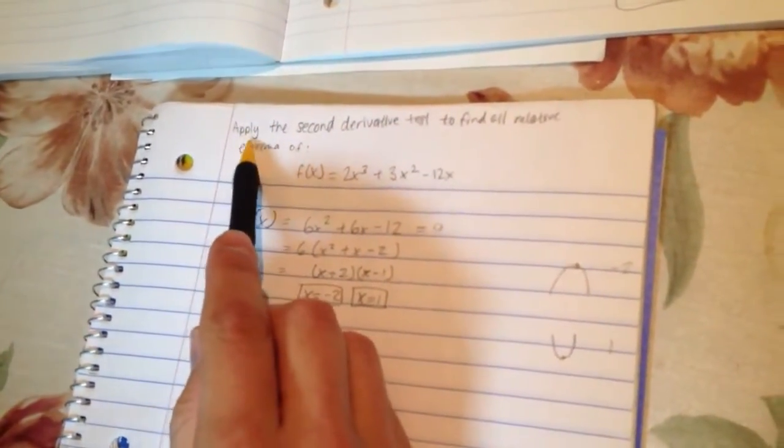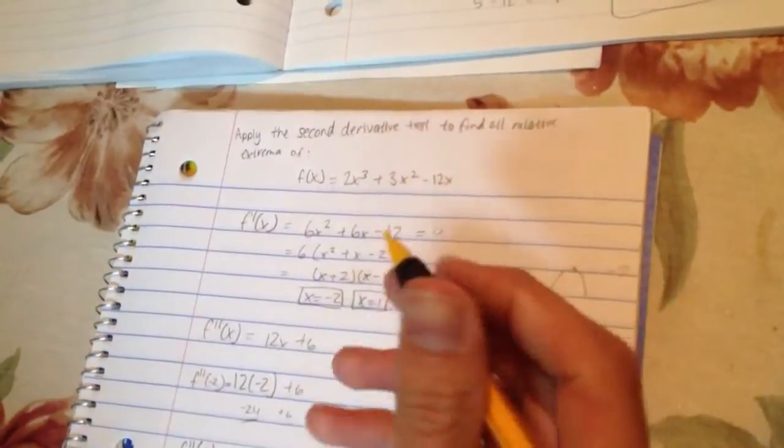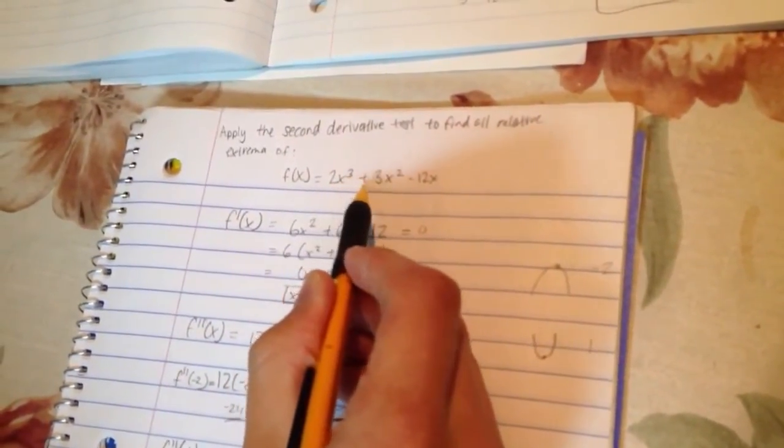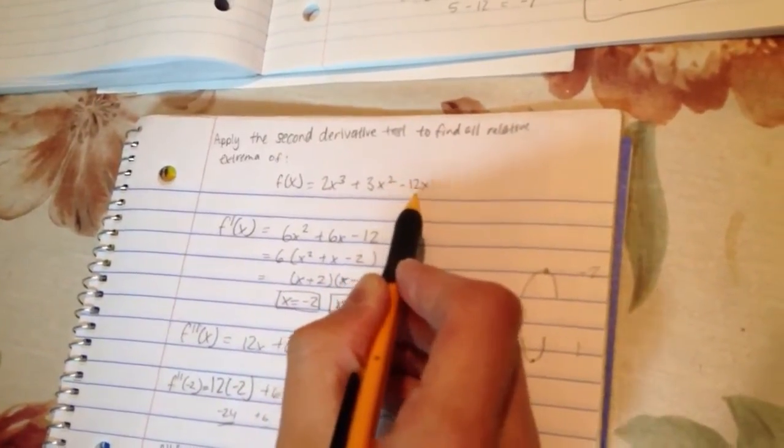Okay, so now in this problem we are applying the second derivative test to find all relative extrema of this particular function, 2x to the third power plus 3x to the second minus 12x.